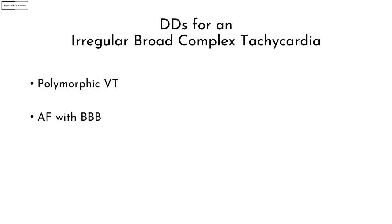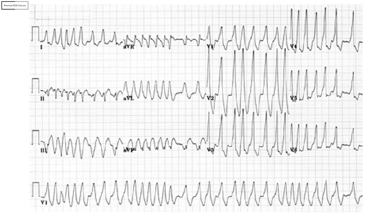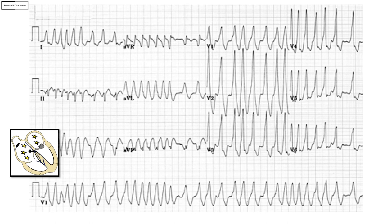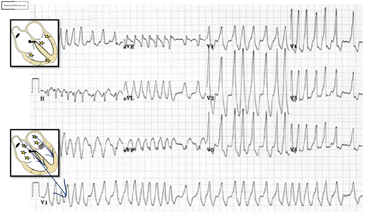There are three differential diagnoses for an irregular broad complex tachycardia: polymorphic VT, AF with bundle branch block, and AF with WPW. Why is this not polymorphic VT? In AF with WPW, there are two pathways from atria to ventricles, but the ventricular depolarization vector always goes in the same direction — so the axis is usually stable. In polymorphic VT, depolarization vectors go in different directions depending on where the ectopic focus is, so the axis keeps changing frequently. Therefore, stability of the axis can differentiate AF with WPW from polymorphic VT.